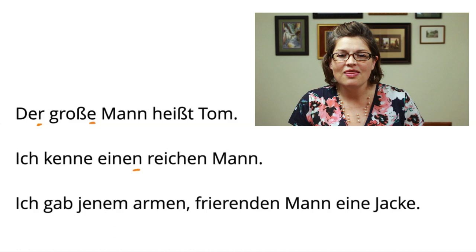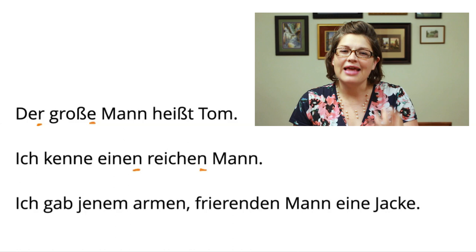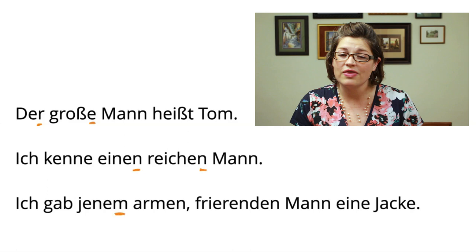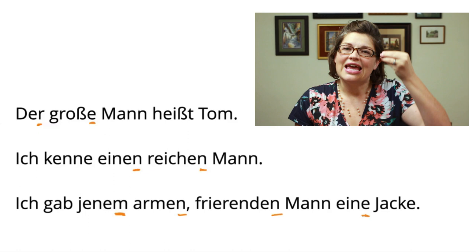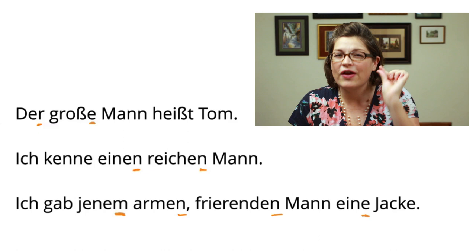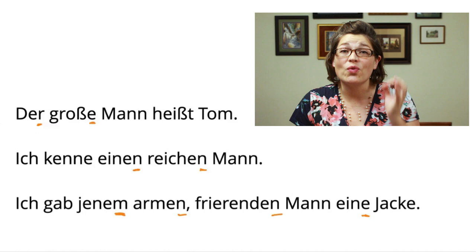And in our final example, 'Ich gab jenem armen frierenden Mann eine Jacke,' we have the Klensions here with this N, some more N's, and then this E is also a Klension. So the thing about the Klensions and how they relate to the case system is that these slight little changes — these single letters at the ends of very particular words in German — communicate the case to us so that we know who is who and what is what in a sentence.